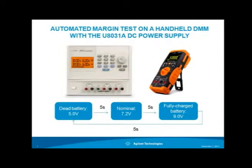In this demo, I will be doing a simple margin test on the Agilent handheld DMM using the U8031A power supply. We will test the operating condition with three battery levels: dead battery at 5 volts, nominal level at 7.2 volts, and fully charged battery at 9 volts.